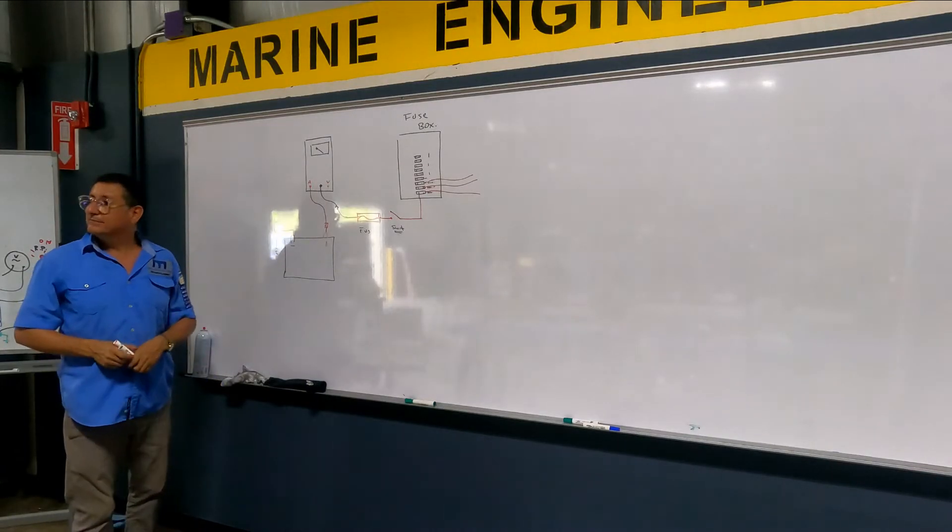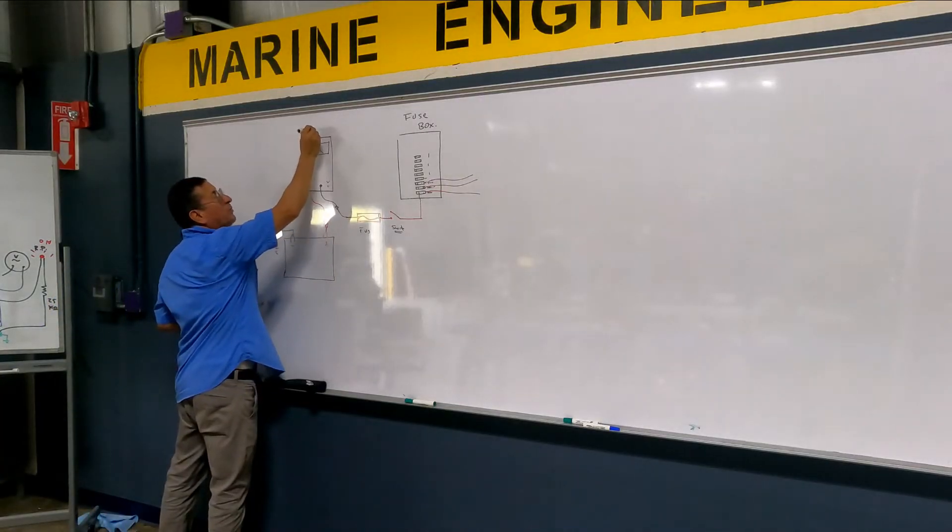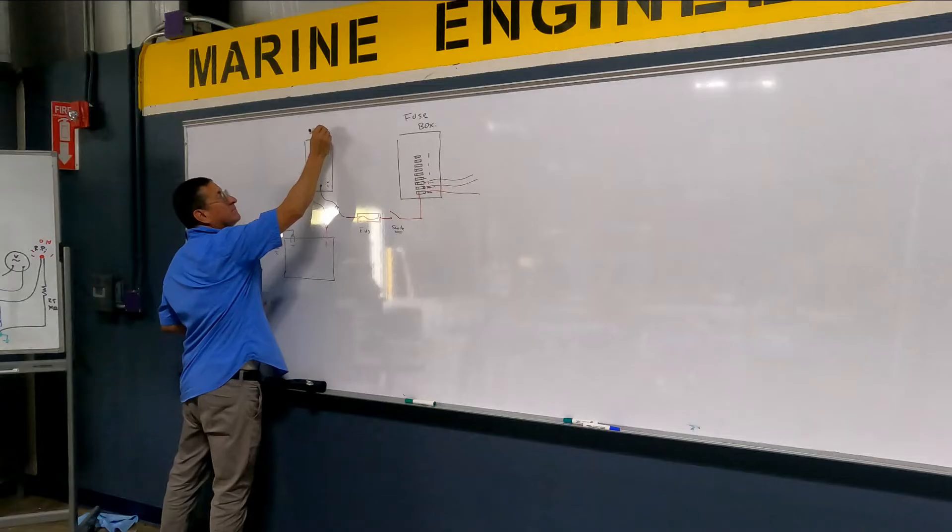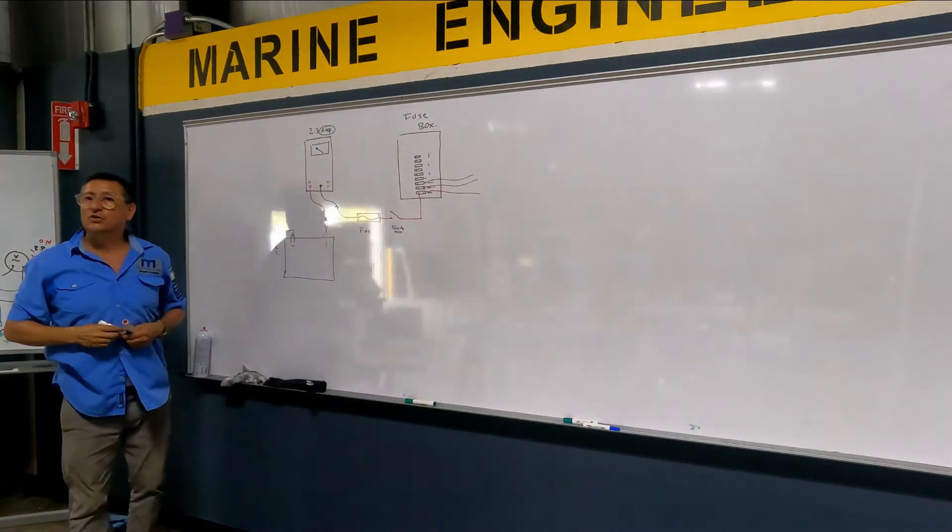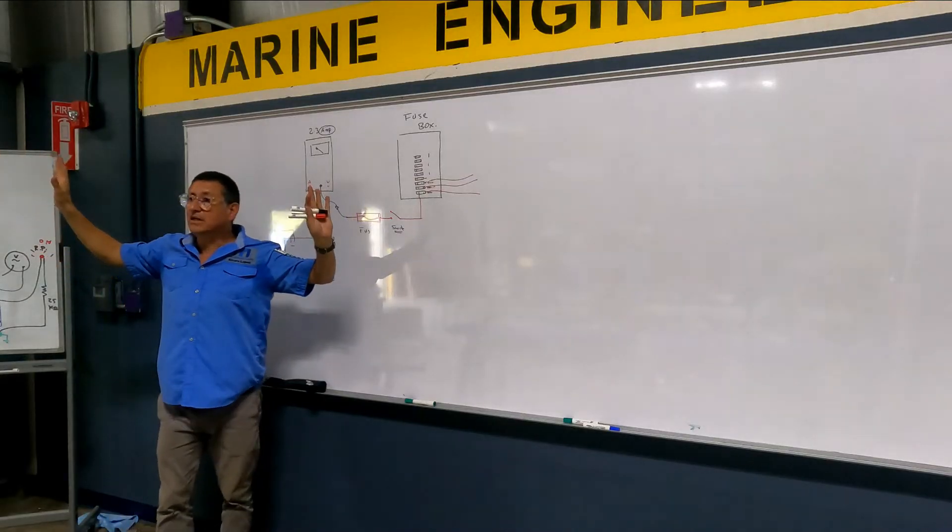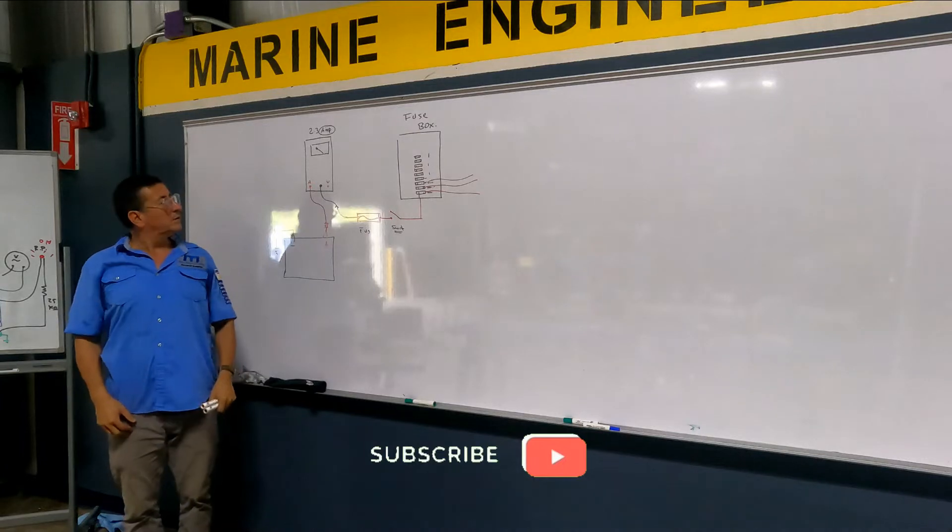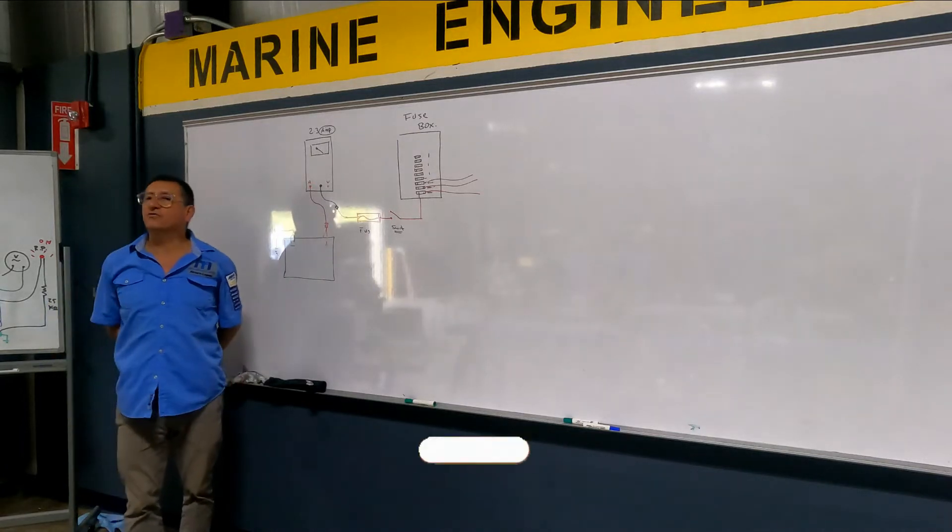And now the reading. The reading is, for example, 2.3 amps. With everything off. 2.3 amps. Everything is off in this moment in the car. But I have 2.3 amps flowing over there.